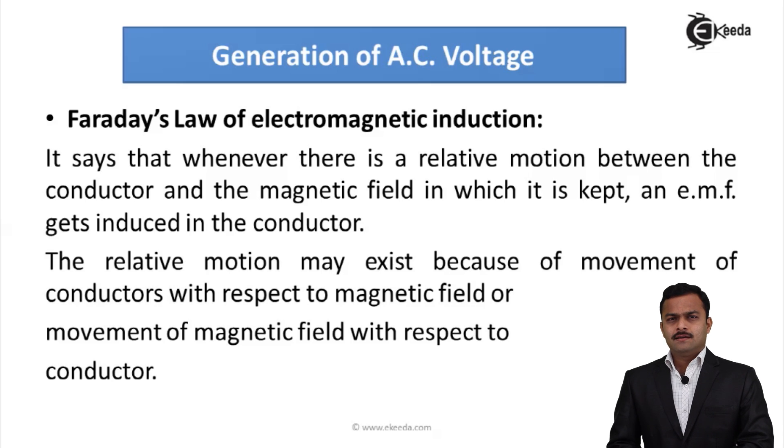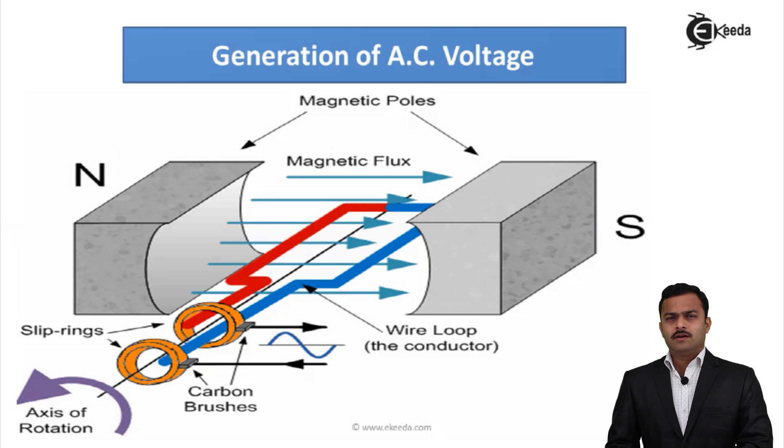To elaborate this, let's see the setup. So here we have considered a permanent magnet with poles N and S as shown in the figure.